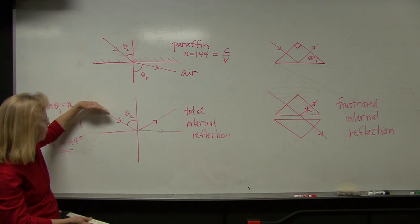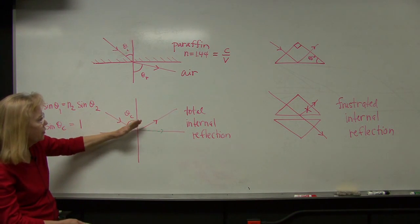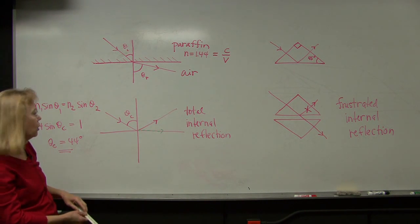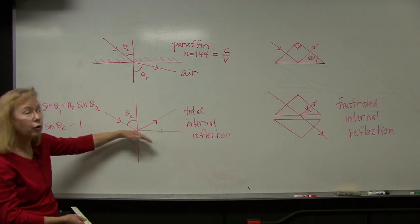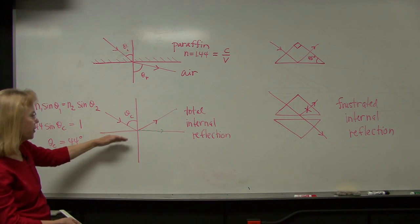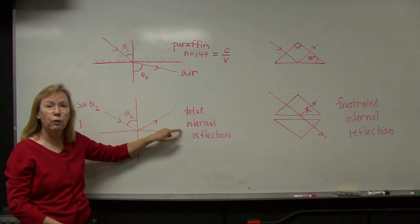So that 100% of the energy that impacts this interface reflects back off at an angle of reflection equal to the angle of incidence. And there is no refraction of the energy into the second medium. This is called total internal reflection.